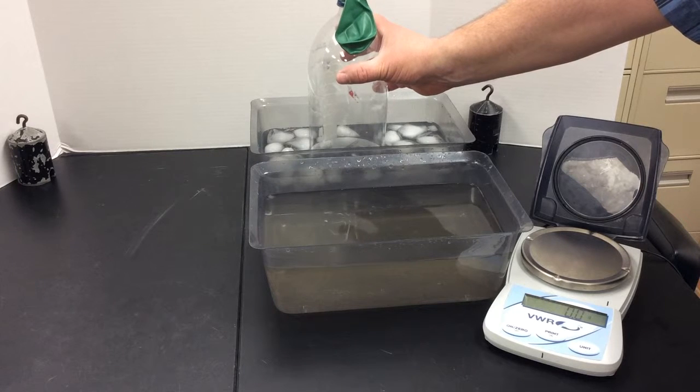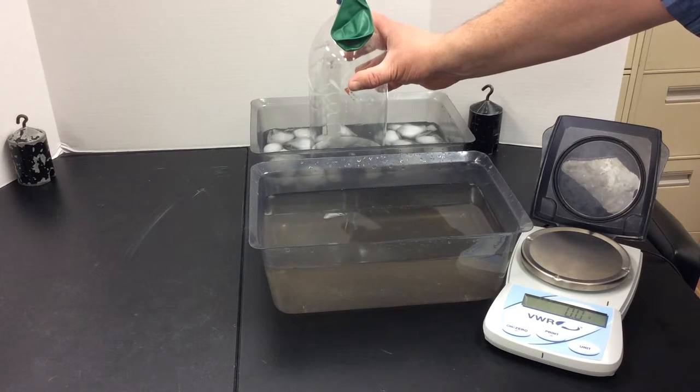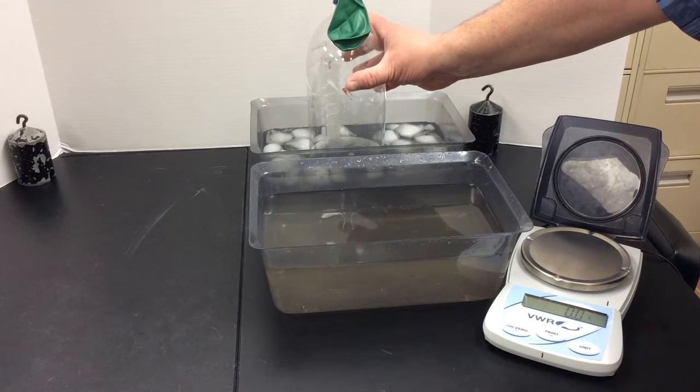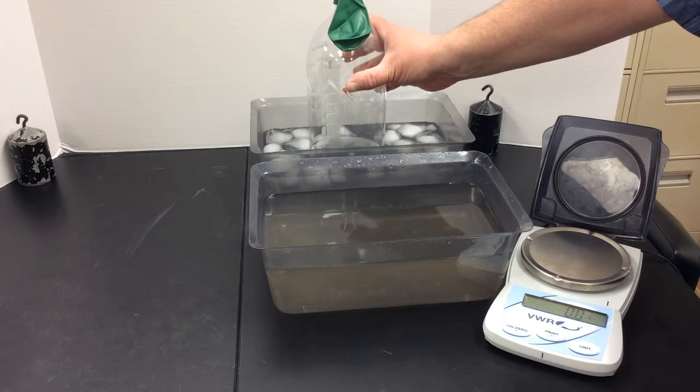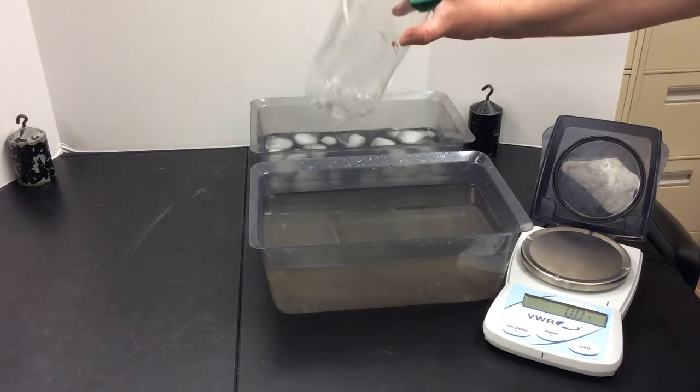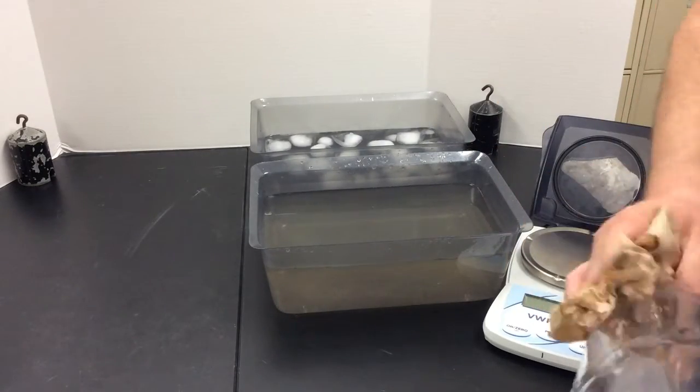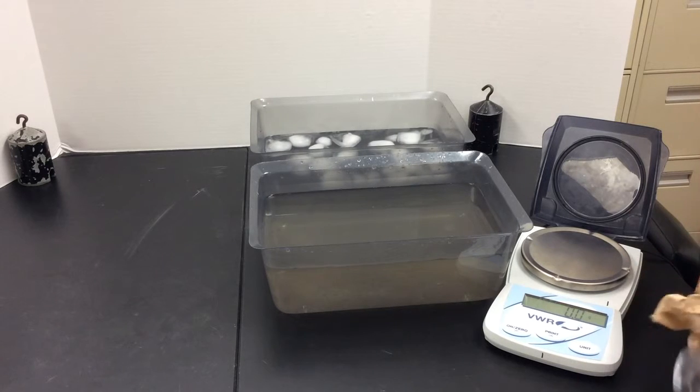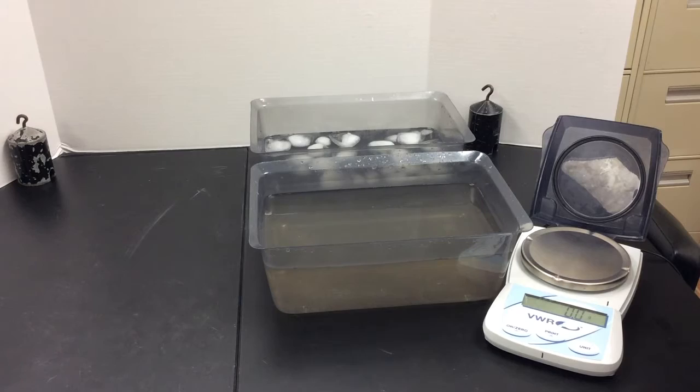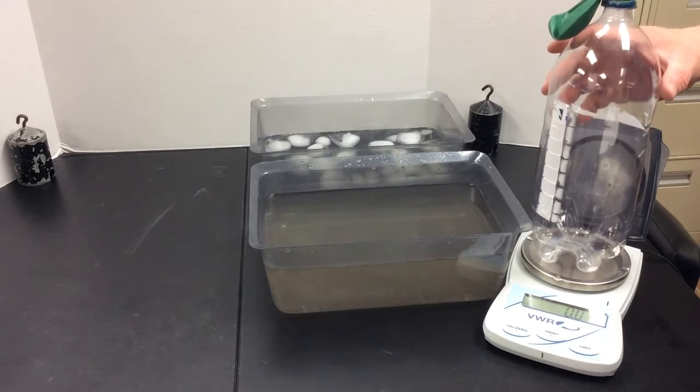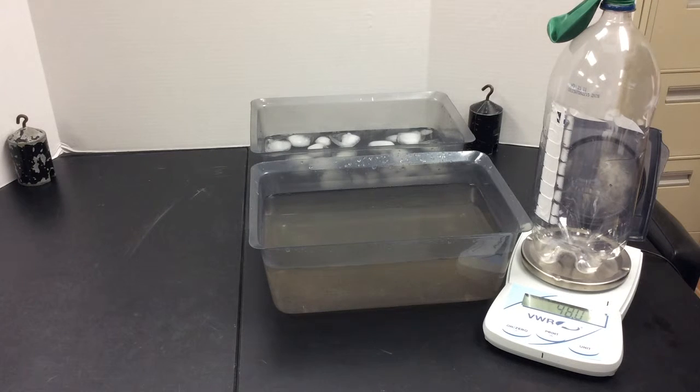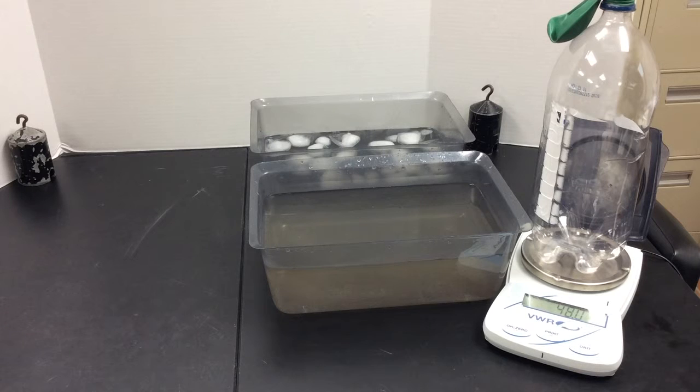The time has been approximately two minutes. I will now dry off the bottle, place it back on the balance, and we will see if the temperature changes have affected the mass of the balloon and the bottle. I'm trying to be careful to get all the water off the bottle. As you can see, upon completion of our experiment, the mass of the bottle is still 48.05.